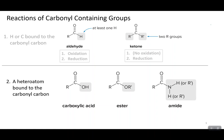So far, we've looked at reactions of several carbonyl-containing compounds, such as oxidation of an aldehyde. We looked at the reduction of both aldehydes and ketones. And then we looked at the conversion of a carboxylic acid to an ester. In this video, we are going to look at how we can convert a carboxylic acid to an amide, and that's going to be the focus of this video.